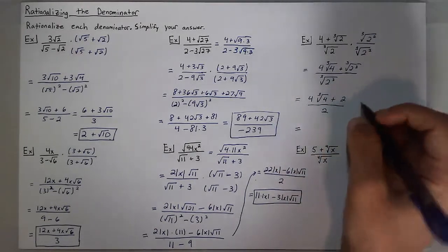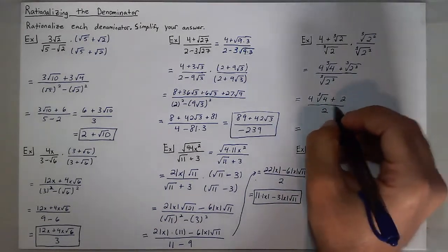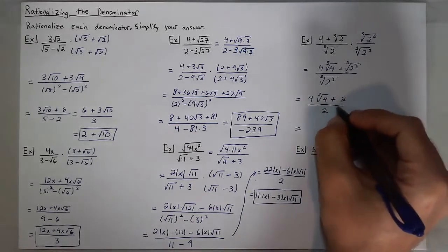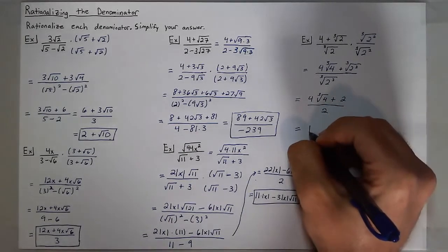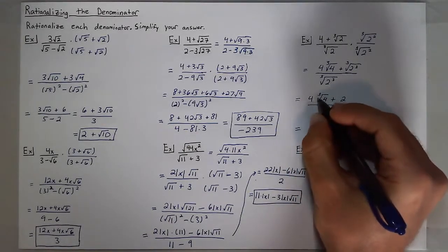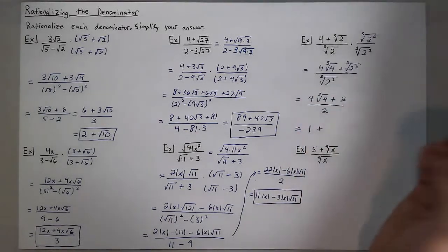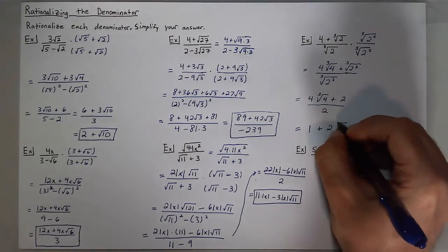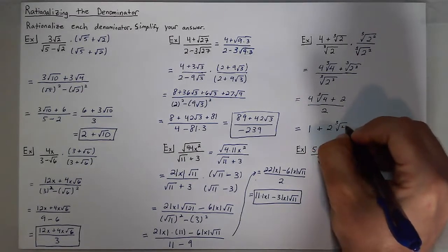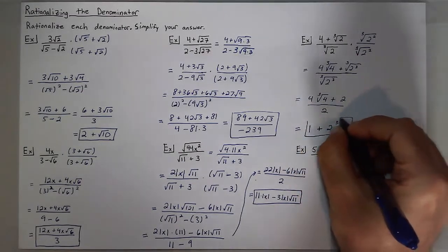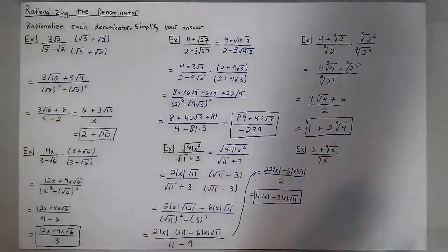Simplifying a little further and putting the radical second: 2 divided by 2 is 1, plus 4 divided by 2, which is 2 cube roots of 4. And I've now rationalized that denominator as well.